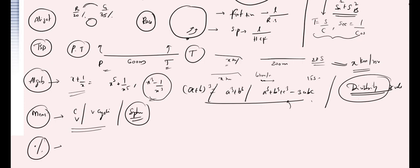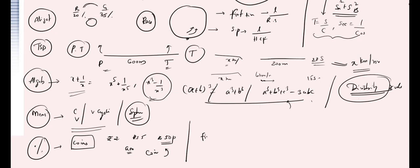In the percentages topic, they asked coin problems — like given denominations of ₹2, ₹5, and 50 paise, and a total amount, find the number of coins. Also, do not forget proportions — how to find the first proportion, second proportion, and third proportion — these kinds of problems are asked in the examination.